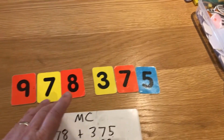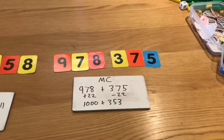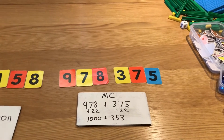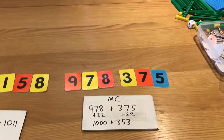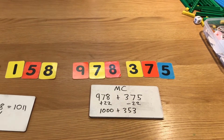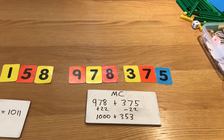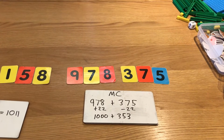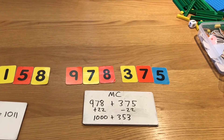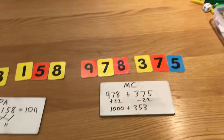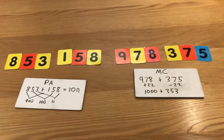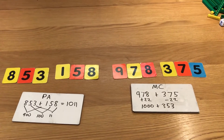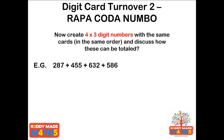1353 and 1011 actually add together very easily — no exchanging at all. Just partition: we end up with 2364. There's also an alternate strategy: 978 is only 22 away from 1000, so manipulate the calculation, pass over 22, and end up with 1000 plus 353, giving 1353. You may also prefer a column method, but there are lots of ways to play with these numbers. Here's a little example for you to try in your own time.